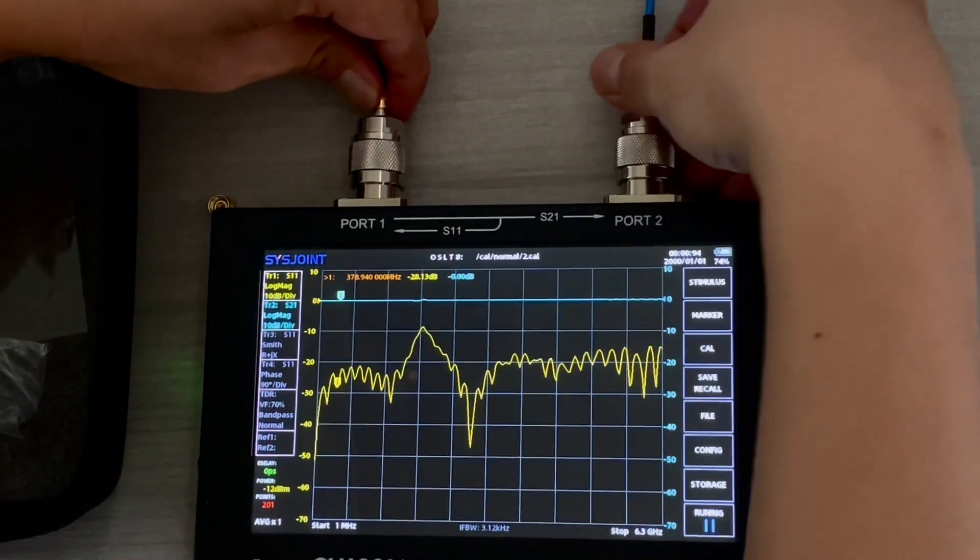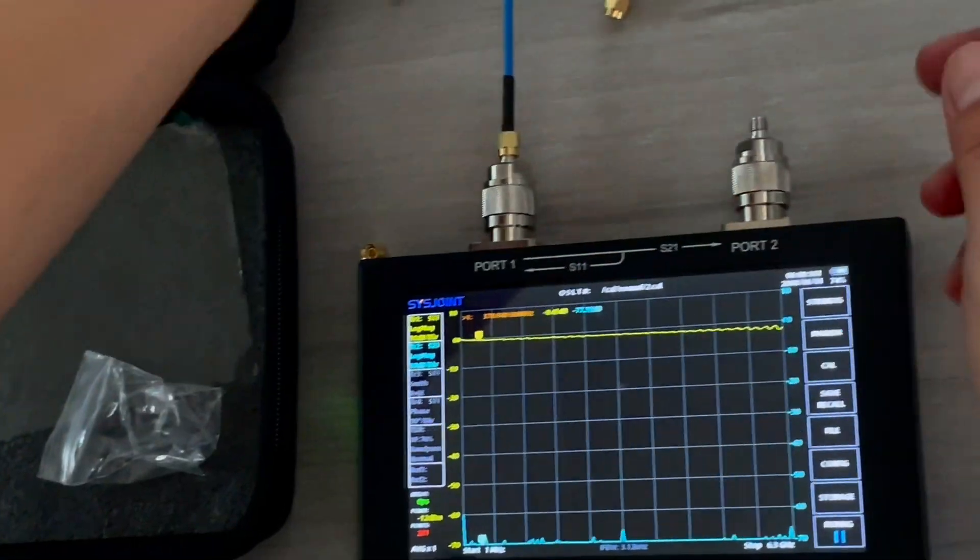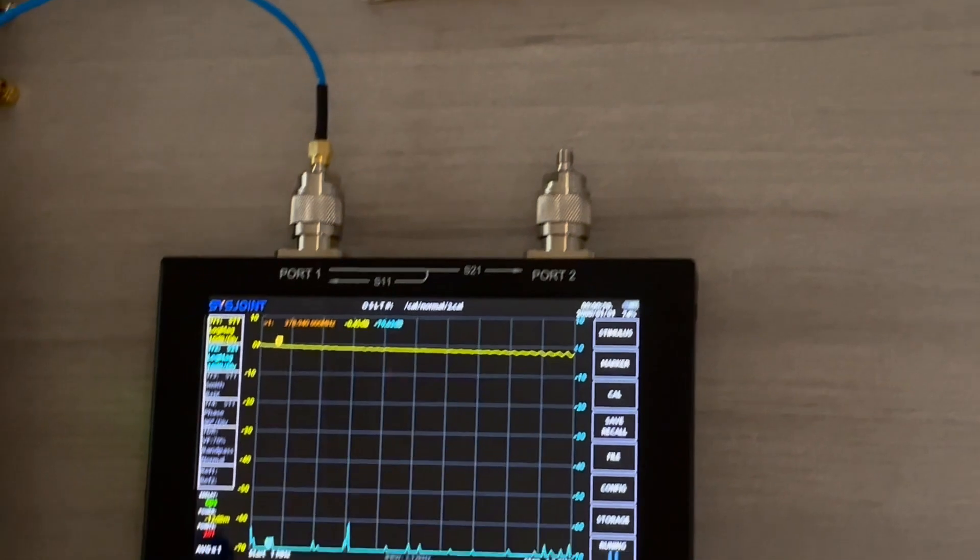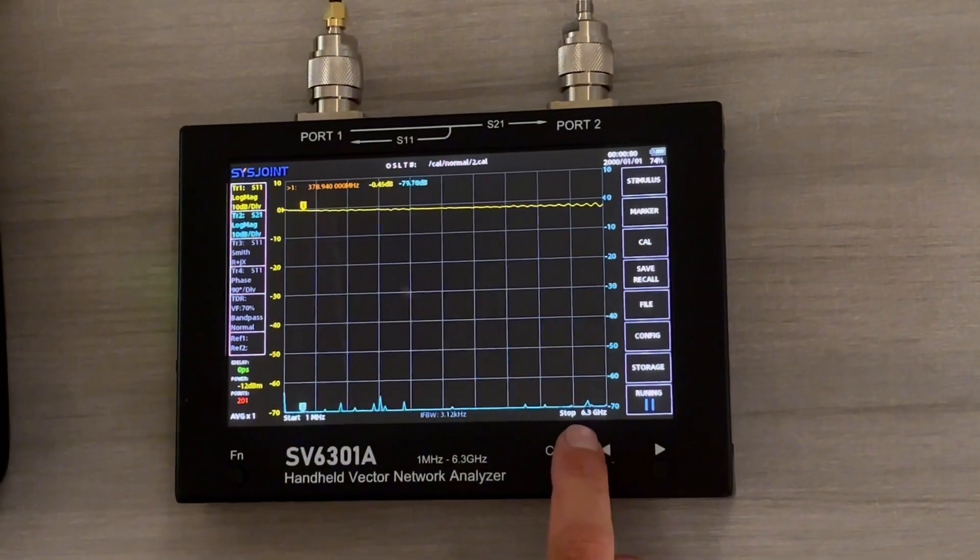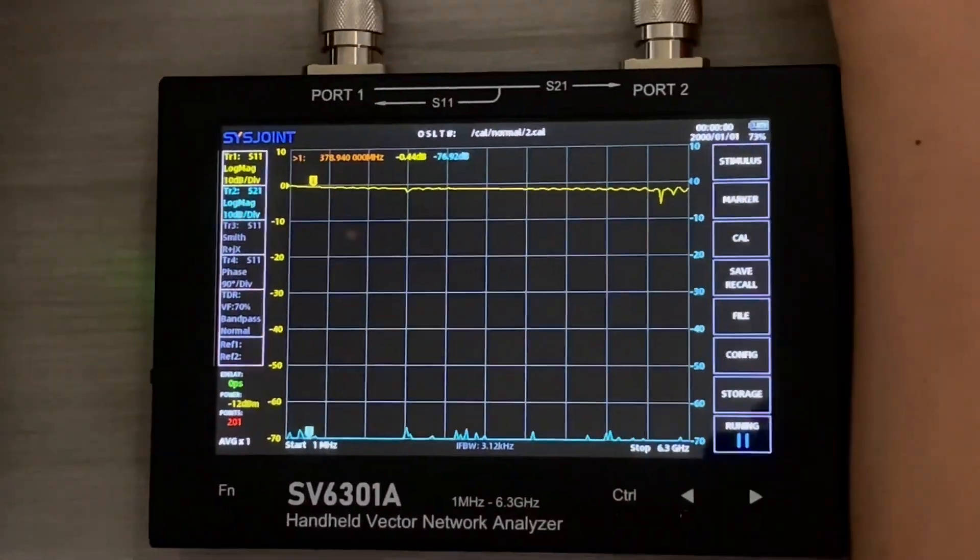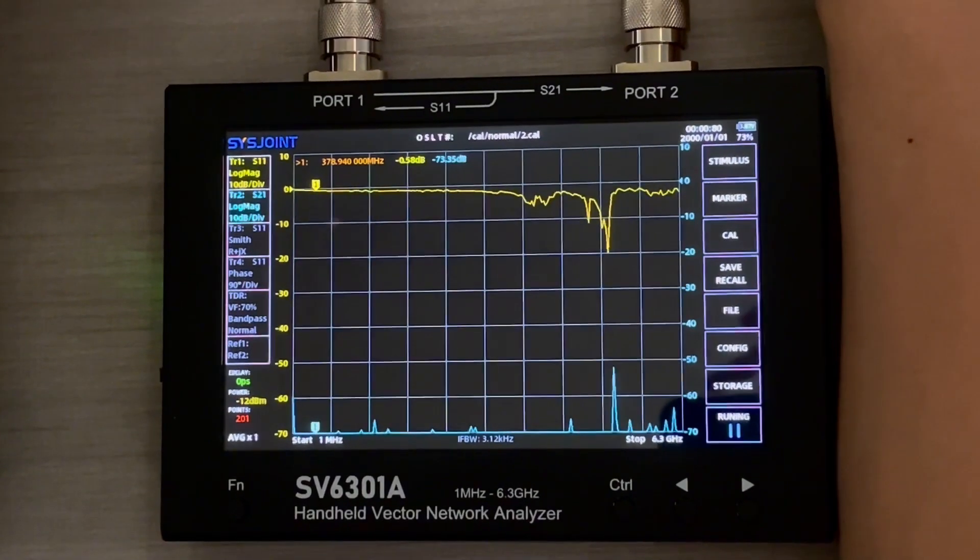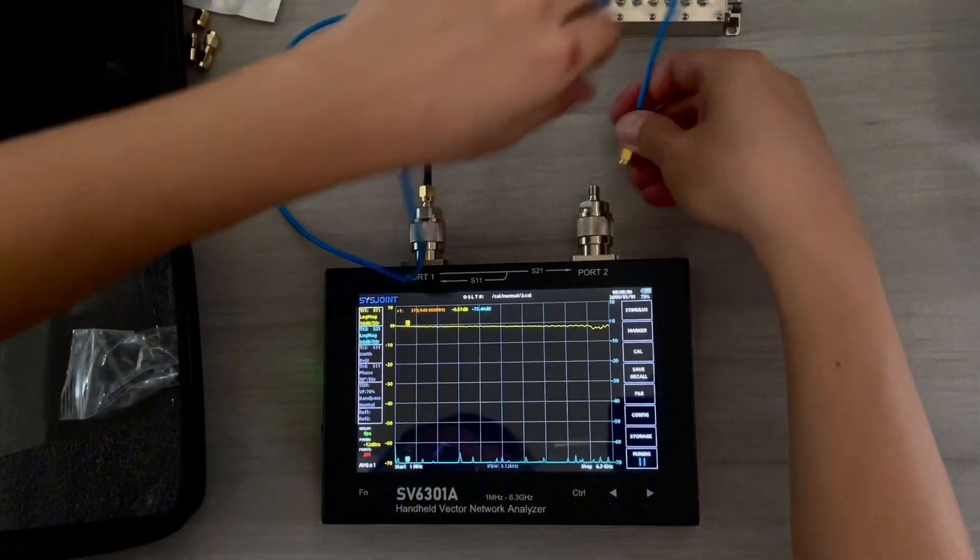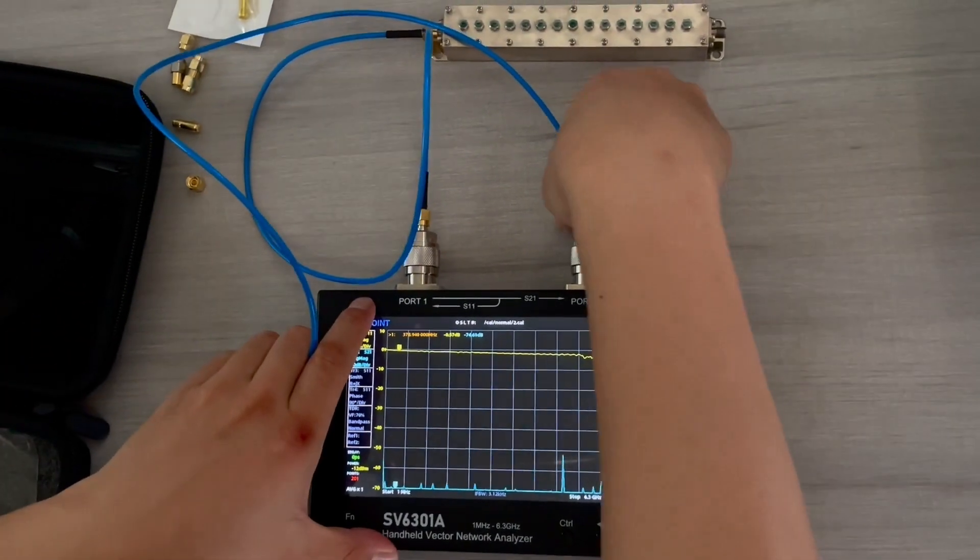And now we can start to test the unknown filter. Notice that for now our frequency band is set to 1 megahertz all the way to 6.3 gigahertz. Let's see what kind of frequency band this filter will be working between. One end and another end.